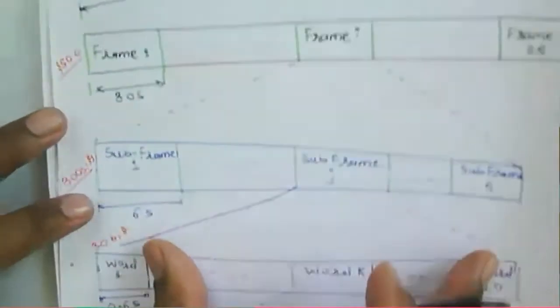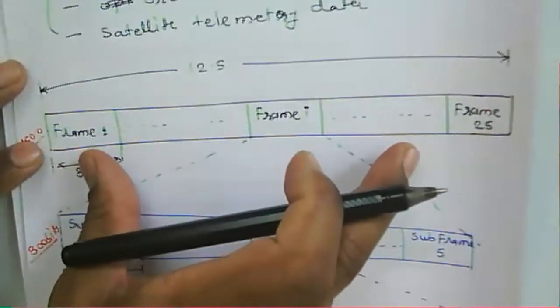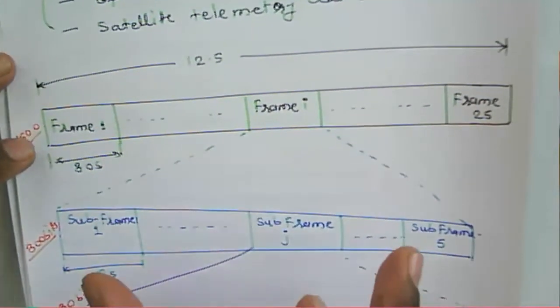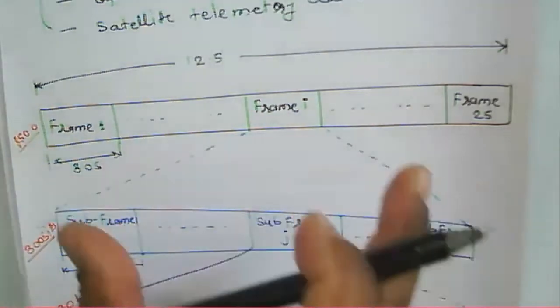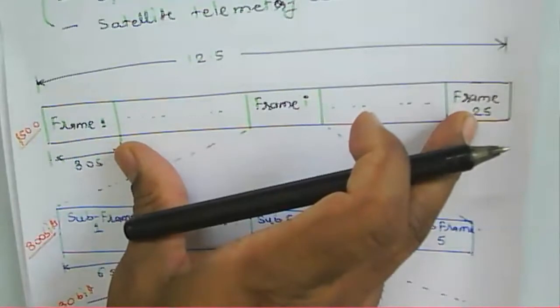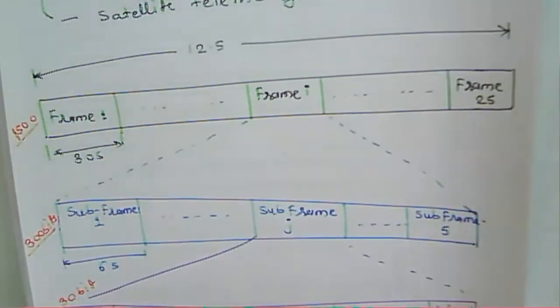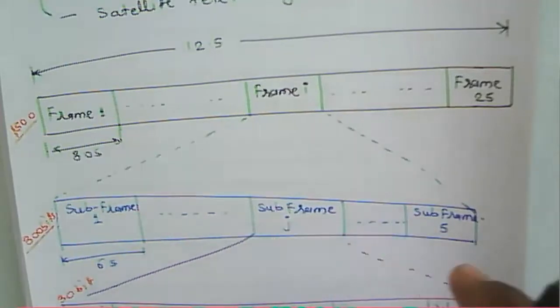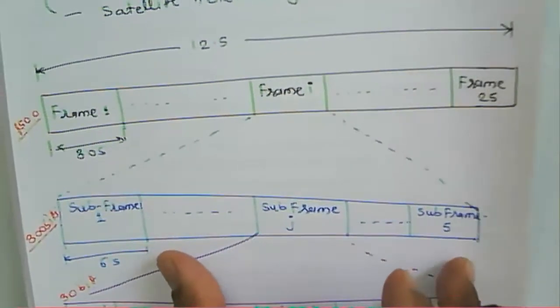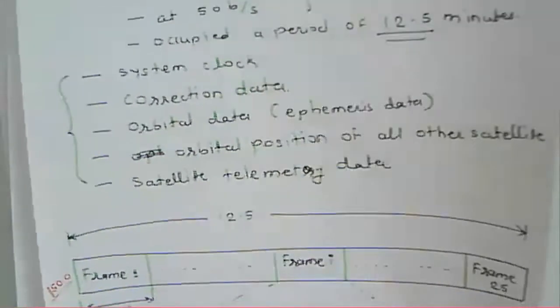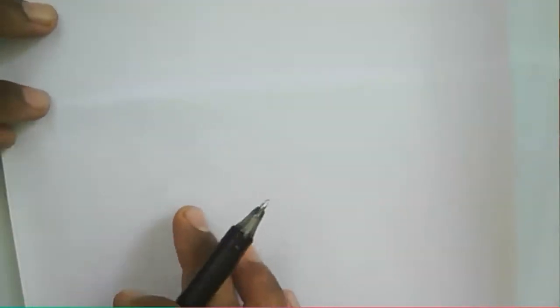The satellite message has sub-frames that are transmitted. That message has frames, then sub-frames, and then words. Considering the five sub-frames, they carry information regarding the system clock, telemetry data, and other navigation information.